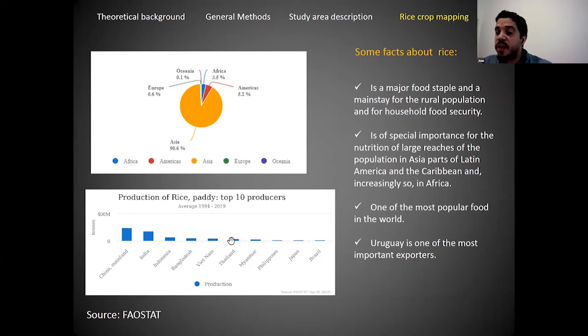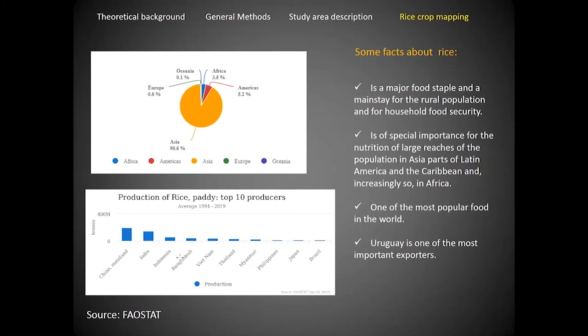Rice is of special importance for the nutrition of large portions of the population in Asia, parts of Latin America and the Caribbean, and increasingly in Africa. FAO says rice is one of the most popular foods in the world. We can see that Asia is the most powerful continent in rice production as an average over about 30 years.